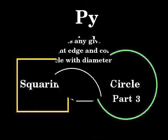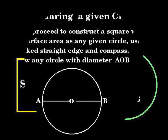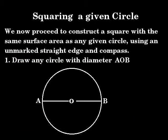Squaring a given circle. We now proceed to construct a square with the same surface area as any given circle using an unmarked straight edge and compass.